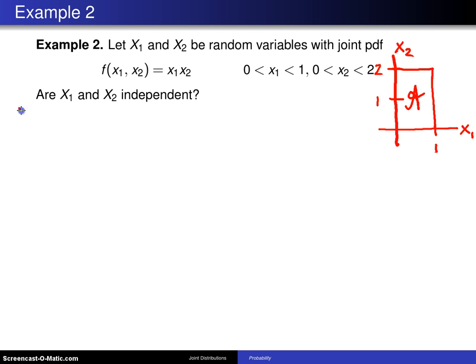What we're trying to show is that to prove independence, we have to show that the joint distribution f(x1, x2) equals the product of the marginals f_x1(x1) times f_x2(x2). So we've got to find these two marginals.